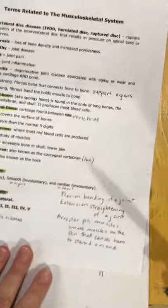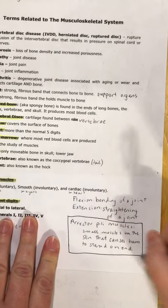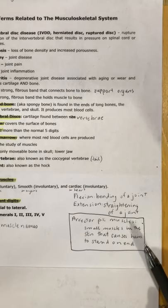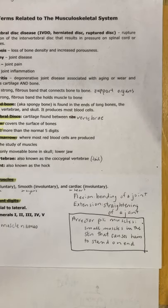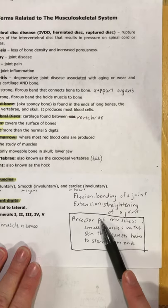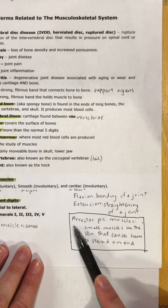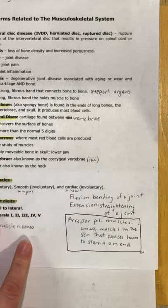One thing I missed: the erector pili muscles. These apply to both the integumentary and muscular systems. They are little muscles in the skin responsible for making hairs stand on end. If you've ever seen a cat or dog with their hackles raised — picture that Halloween cat or an angry dog with hair standing straight up, or the bottle brush tail of a scared cat — that's the erector pili muscles in action. 'Pili' refers to hair and 'erector' means standing up.